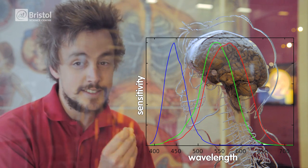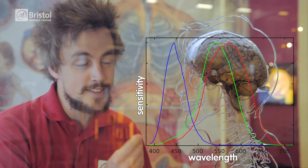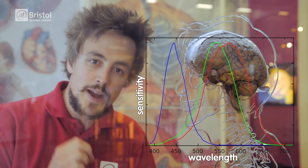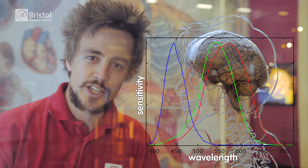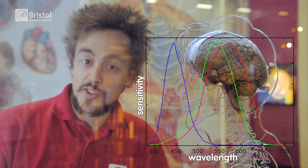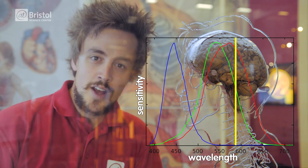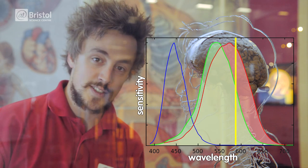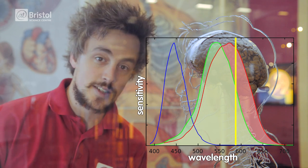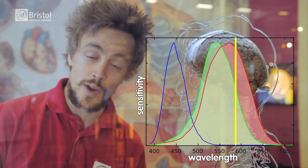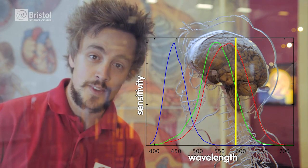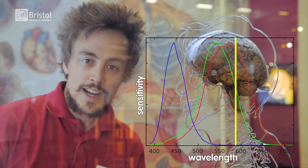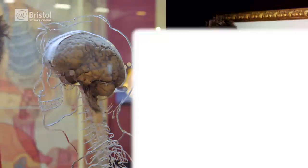As your cone cells are stimulated, they send a signal to your brain which creates an image based on that information. For example, when yellow light enters your eye, both the red and green cone cells are stimulated because yellow is between red and green on the spectrum. Your brain receives that information and recognises it as yellow.